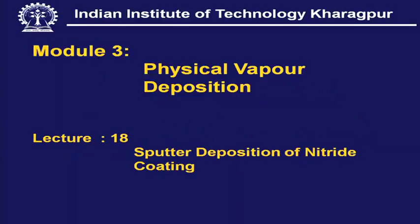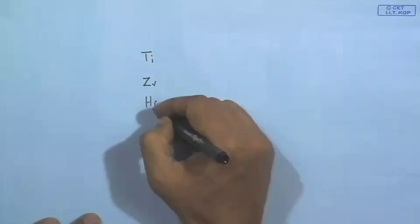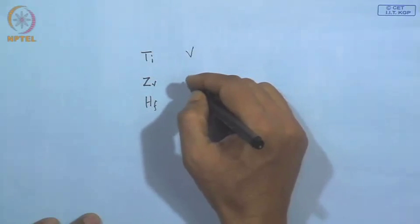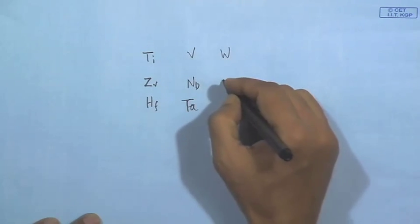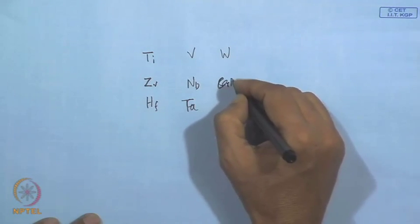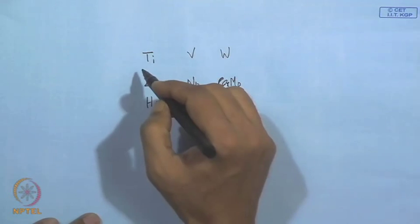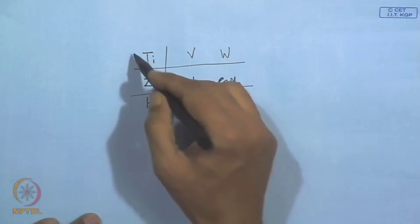Today's topic is sputter deposition of nitride coatings — specifically metal nitride coatings of transition elements: titanium, zirconium, hafnium, vanadium, niobium, tantalum, tungsten, molybdenum, and chromium. These transition elements are known as good carbide formers, oxide formers, boride formers, and nitride formers.